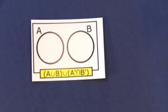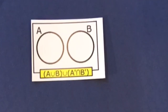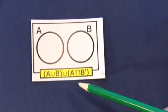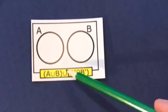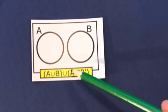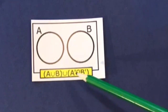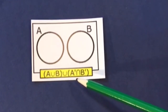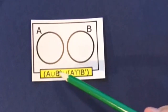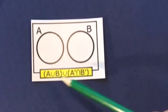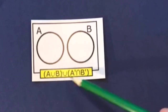For this example we again have two disjoint sets, and a large expression with two sets of brackets joined by a union sign. Luckily it's a union, so we can do both sides independently.